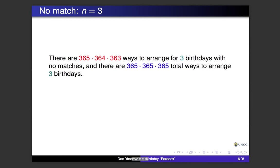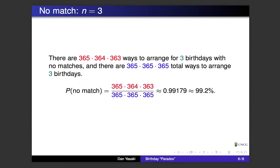For n=3, we follow the same pattern. To arrange three birthdays with no matches, there are 365 choices for the first person, 364 for the second, and 363 for the third, since the third person can't share a birthday with either of the first two. The total ways to arrange three birthdays is 365 times 365 times 365 with no constraints. So the probability of no match is 365×364×363 divided by 365³, which is about 99.2%.